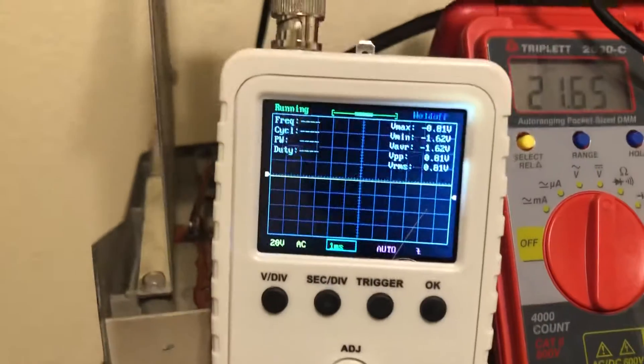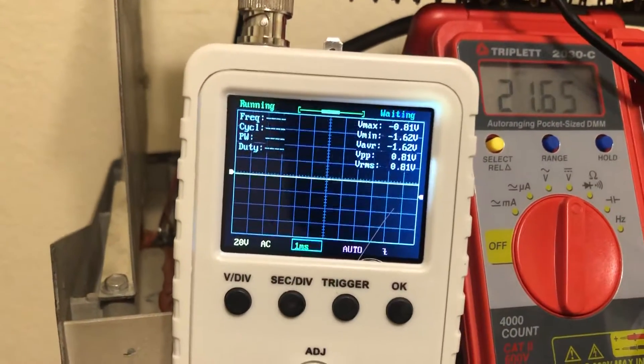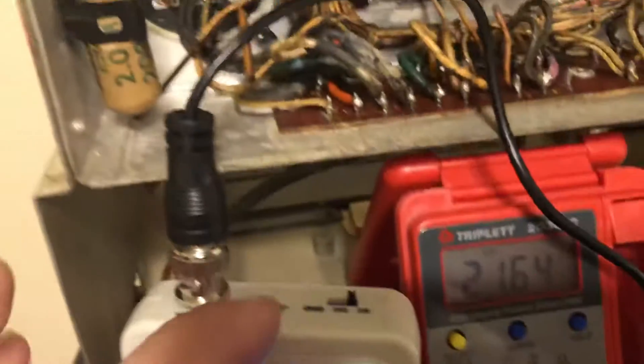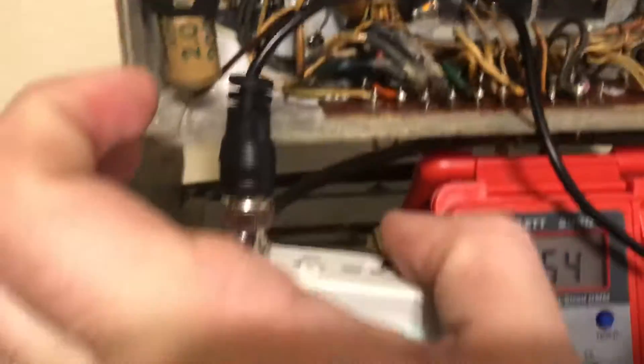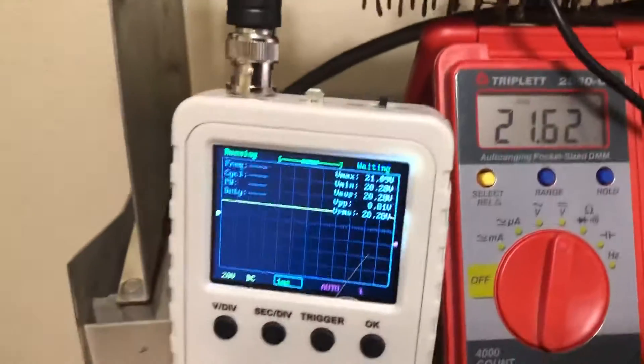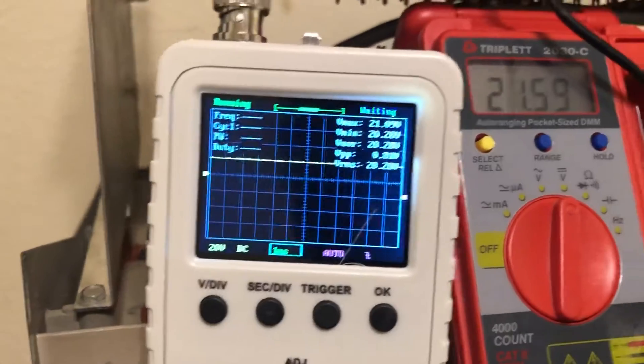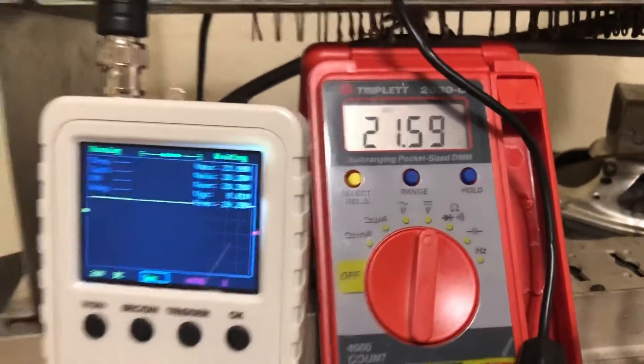Now I have the oscilloscope set on AC, and you can see why. When I switch the oscilloscope to DC, it actually shows the voltage at 20 volts right there. It's steady. When I actually key it up with the microphone.